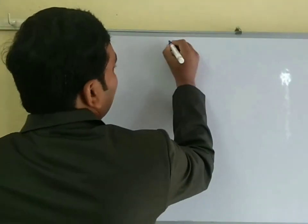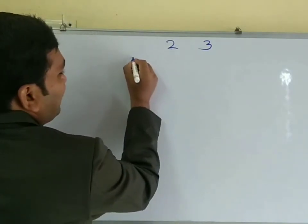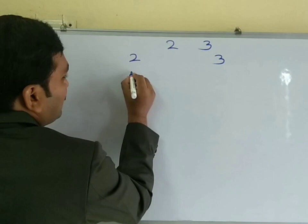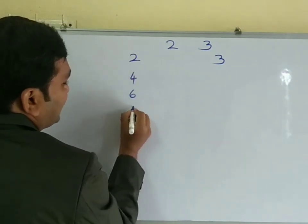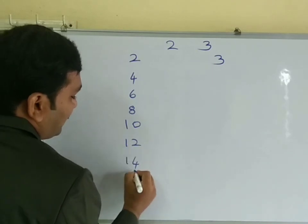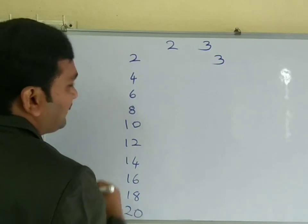Now I am taking the 23. So 23 table, 2 table I want to need. So 2 this side, 3 here. So 2, 4, 6, 8, 10, 12, 14, 16, 18, 20.